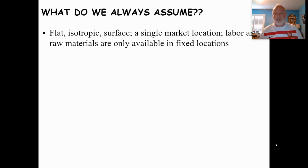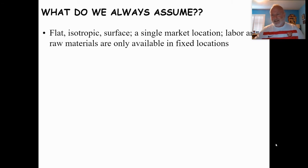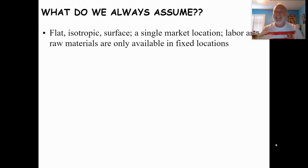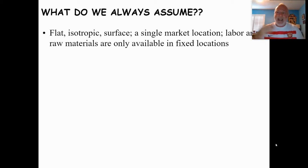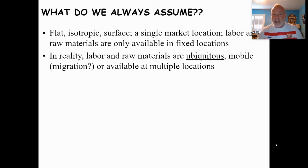All models are limited because they're hypothetical — not intended to show every exceptionality or special condition. This class involves a lot of generalizations. Labor and raw materials can be fairly ubiquitous — people move around, and raw materials are often available in more than one place. Some raw materials are very special and found only in certain locations, like vanilla from Madagascar, which makes them more valuable. Generally, though, labor and raw materials are somewhat ubiquitous.